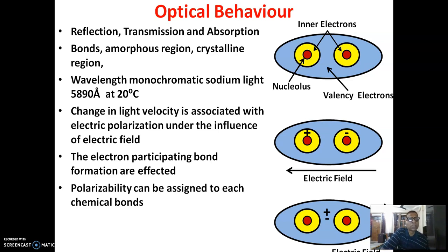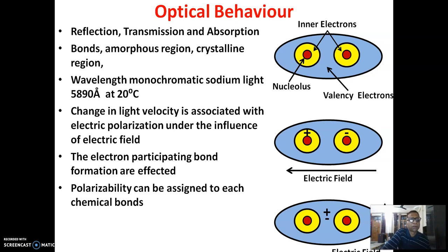Those structural parameters include different bonds, content of the amorphous region, and content of the crystalline region. The wavelength of monochromatic sodium light used to analyze optical behavior is 5,890 angstroms, and the temperature considered for this experiment is 20 degrees Celsius.